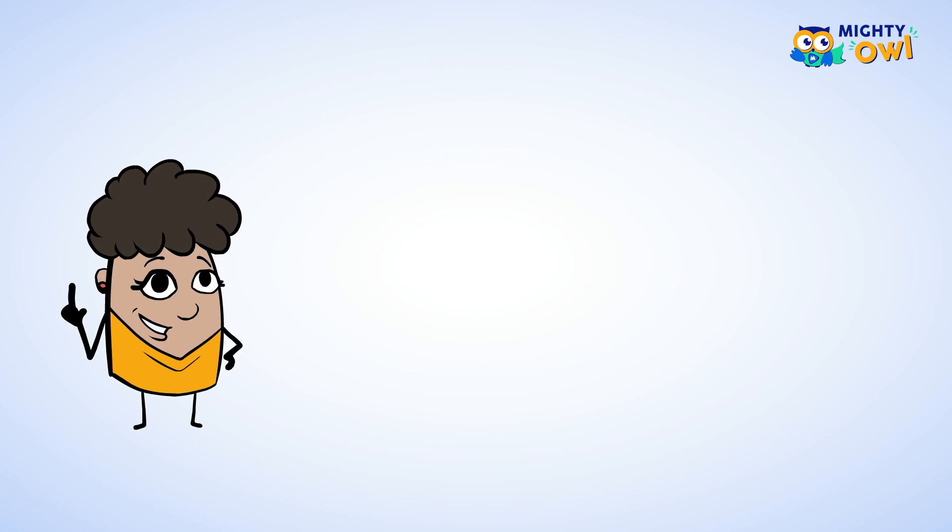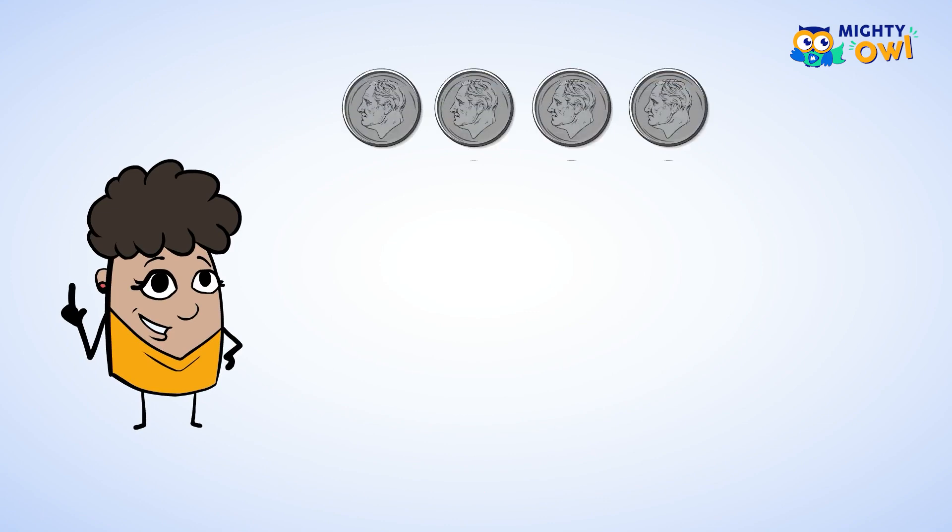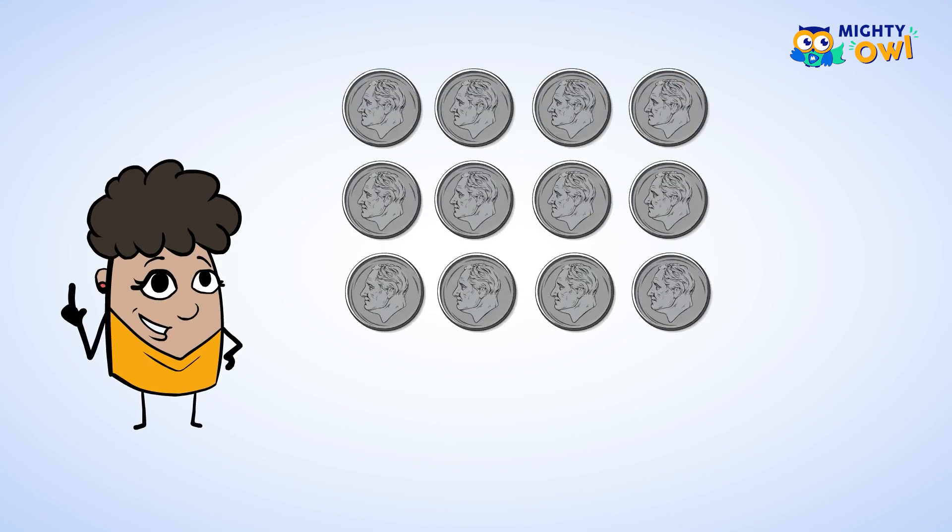Let's use another strategy just to make sure you're correct. Visualize twelve groups of ten. You could skip count by ten, or just add them all up, and that would still give you 120.